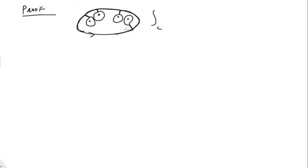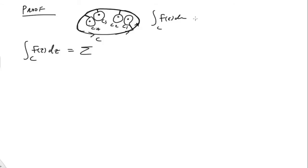So C can be broken up into little bits. I can call them c1, c2, c3, c4. What I can say then is: the integral of f(z) dz around the big contour equals the sum — by the Cauchy-Goursat theorem — from k equals 1 to n of the integral around c_k of f(z) dz.